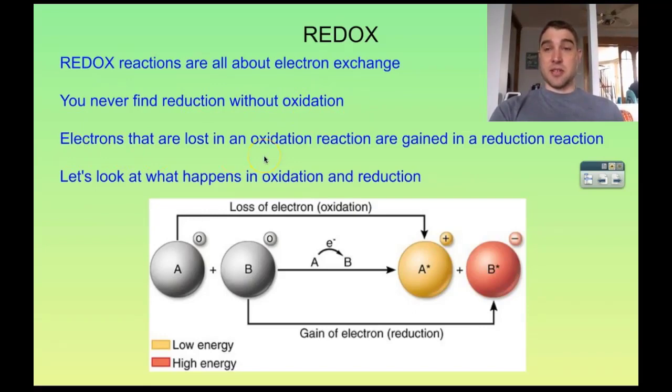The electrons that are lost in an oxidation reaction, so oxidation is lost, are gained in reduction reactions. Reduction is gain. We're going to focus on those terms and focus on what electrons are doing. So let's have a look at what happens in an oxidation and a reduction reaction.